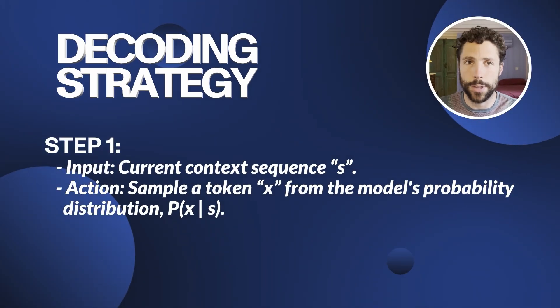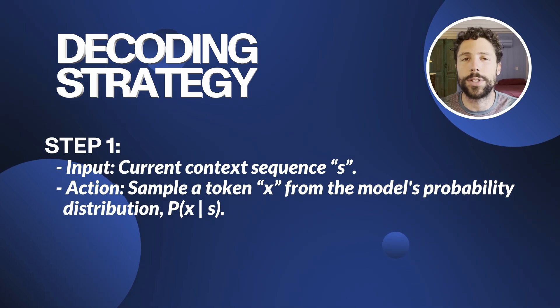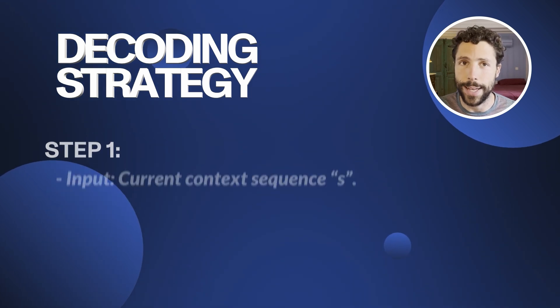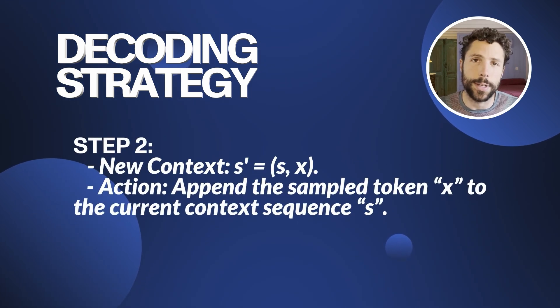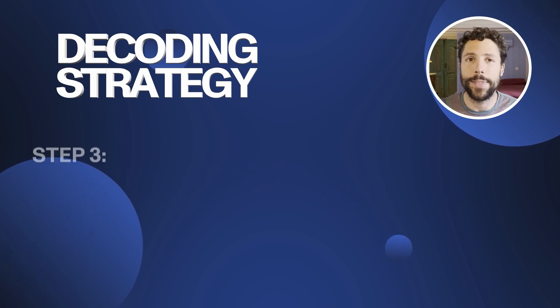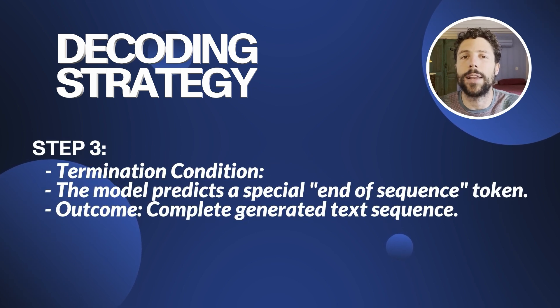With this foundation, we can describe the general schema of any decoding strategy. Step 1: given the current context sequence S, sample a token X from the model's distribution conditioned on S. Step 2: update the context to S followed by X, and repeat until a termination condition is met — typically when the model predicts a special end-of-sequence token. The choice of method by which we sample X in step 1 is precisely what distinguishes different decoding strategies.